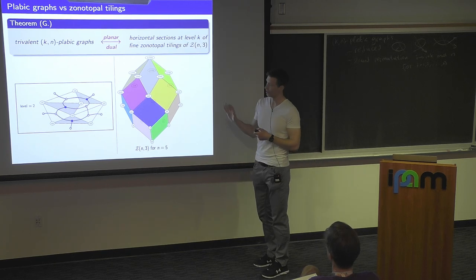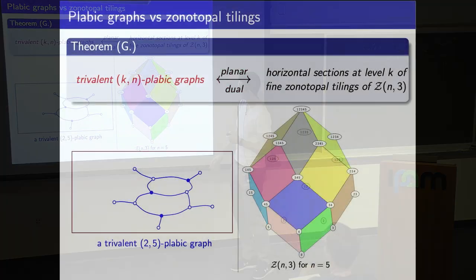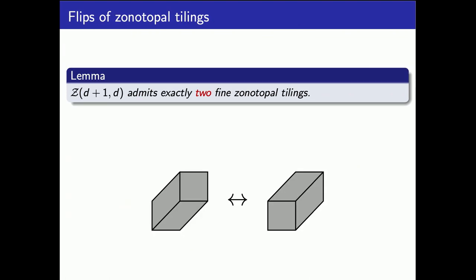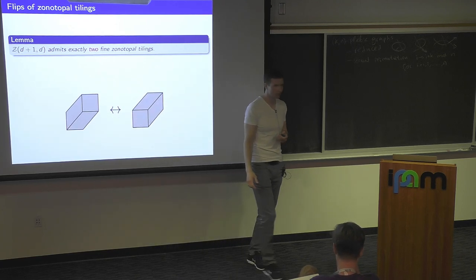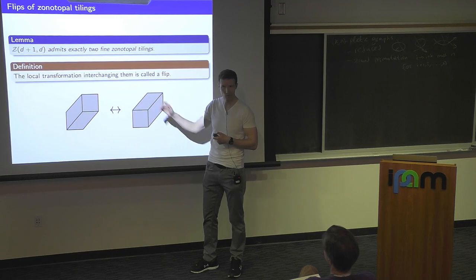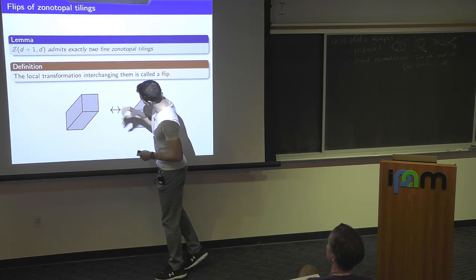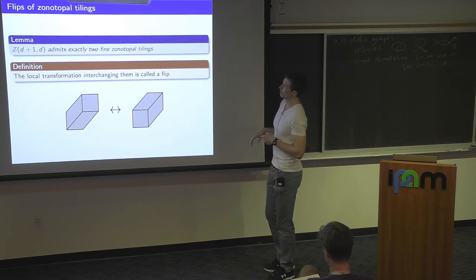Let me also mention briefly the moves for plebik graphs and fine zonotopal tilings. If you take d vectors in d dimensions, they form a single tile. But if you take d+1 vectors in d dimensions, you get an interesting zonotope that always has exactly two fine zonotopal tilings. Here I took three vectors in the plane — here are the two possible zonotopal tilings of that zonotope. Whenever I find a local picture like this, I can replace it with the other one — that is called a flip.